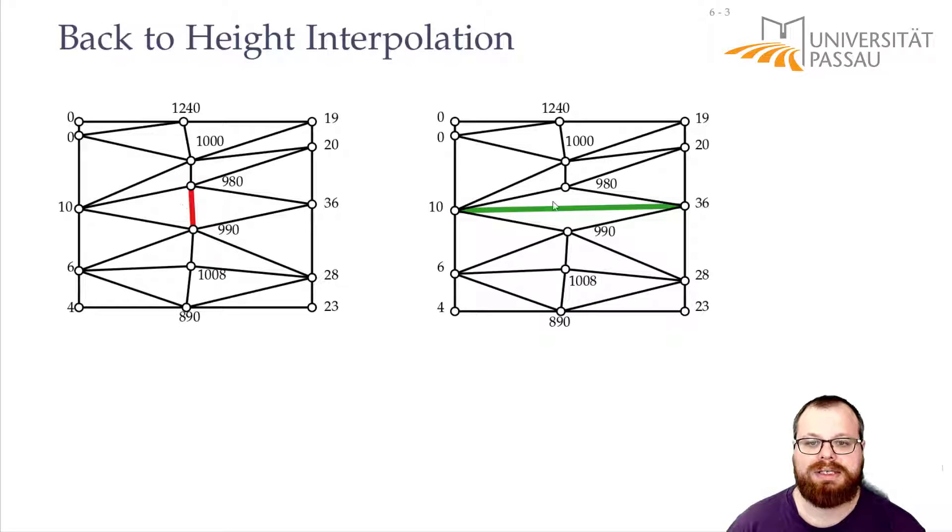If I want to do the height interpolation now in these two triangulations, let's say I want to look at this point. Which height do the two interpolations give me? Here I would interpolate on the red edge, so between these two sites. This one is approximately in the middle. Here the height is 980, 990, so here it would give me 985.